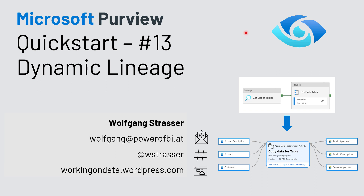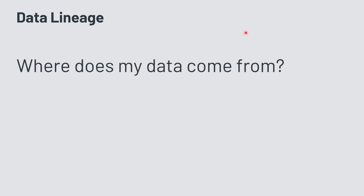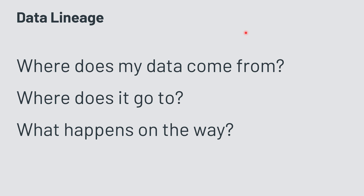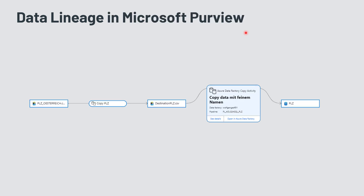Lineage is one of the most important things to consider when you want to know more about your data estate. The non-scientific definition of data lineage is: where does my data come from, where does my data go to, and what happens along the way — what are the different data stores involved, what are the different transformations and processes.